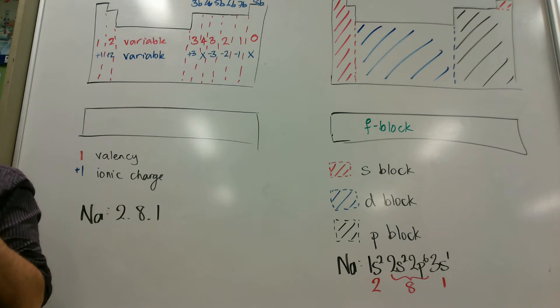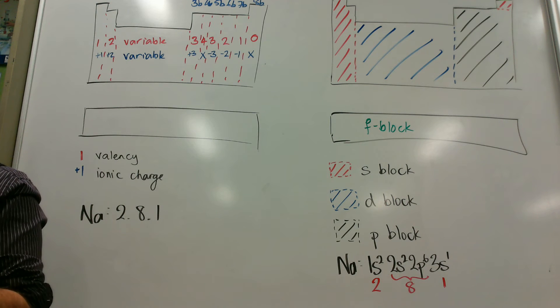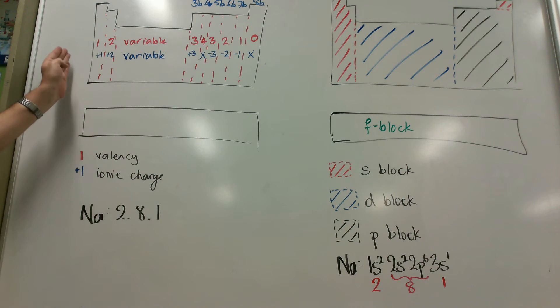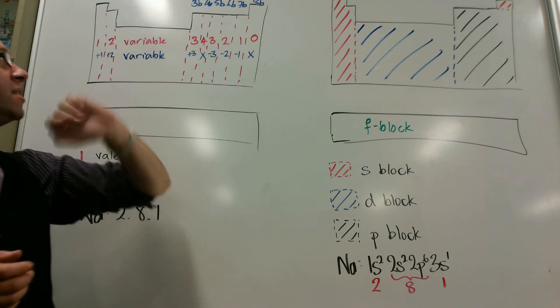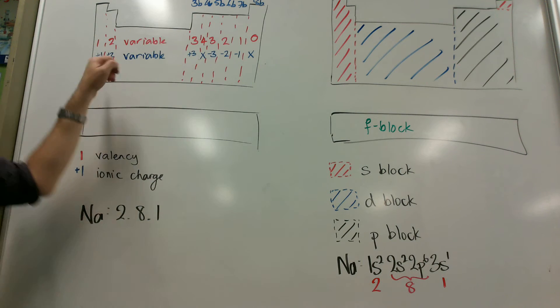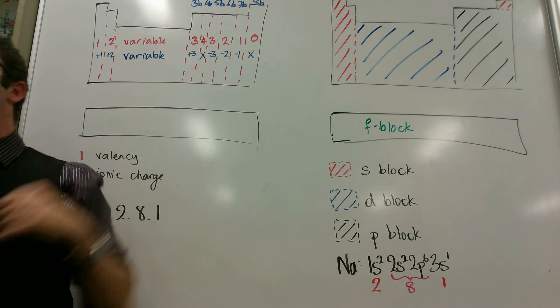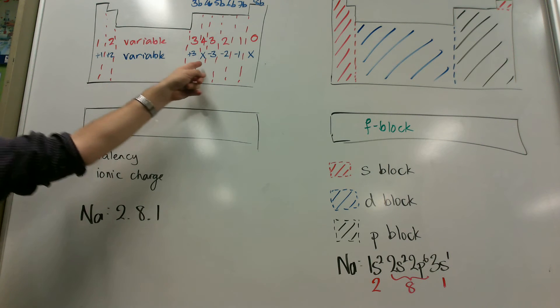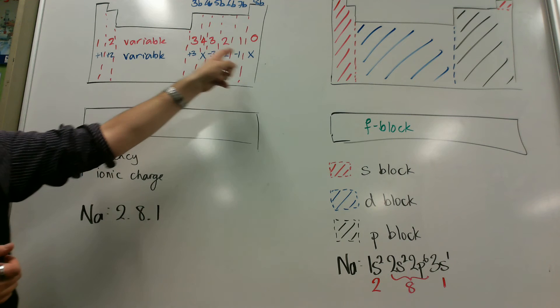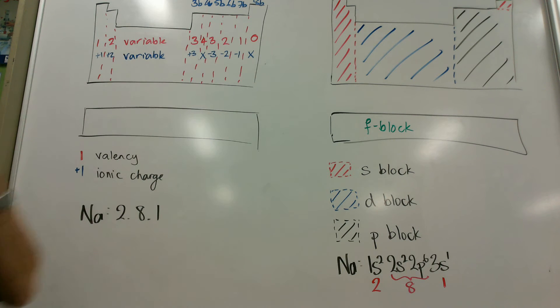We ignored this 3. We went to 3b and said these ones have got 3 in their outer shell. These ones have got 4, 5, 6, 7, 8. Oh, except for helium, because it's only got 2. Still remember that. That's still really useful knowledge for you to have because it'll help you predict the valency and the charge of the ions.